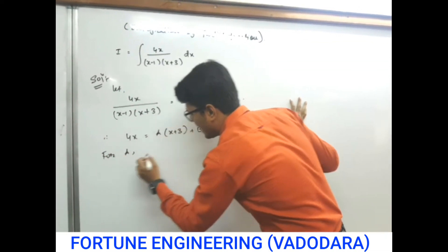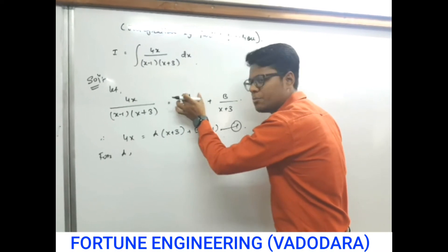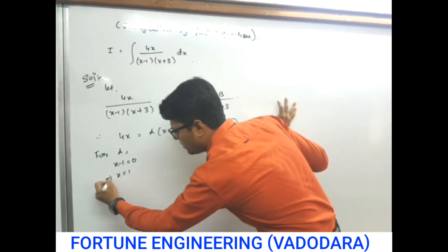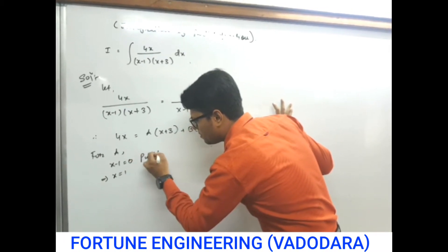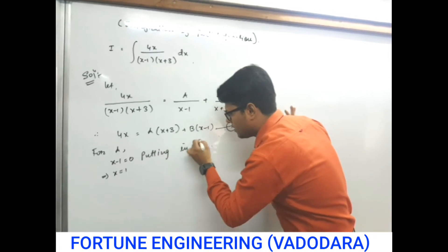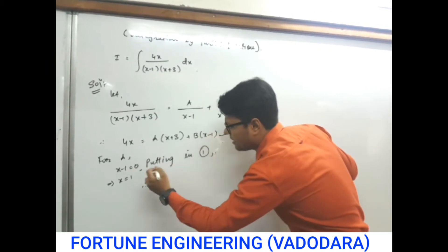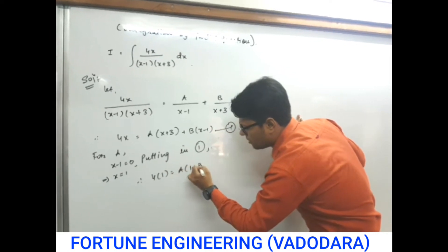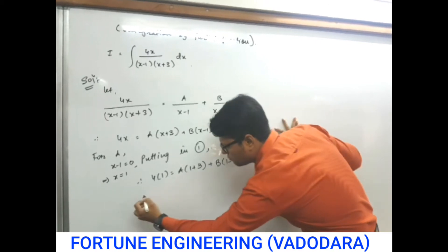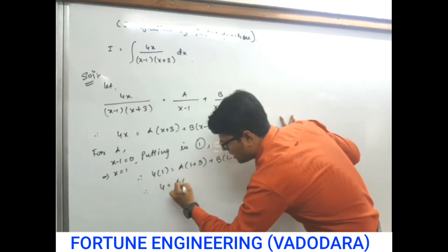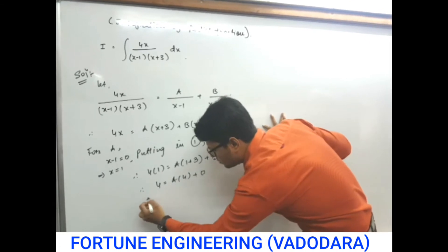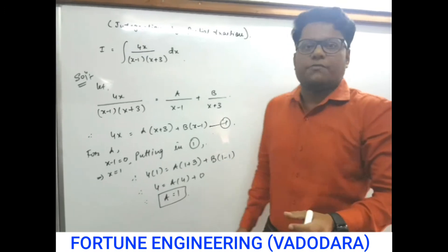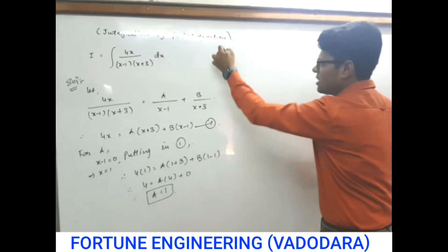For finding a, always take the denominator of a as 0. So x minus 1 is 0. So x is equal to 1. We put, putting in 1. So putting in 1, that will give us 4 into 1, a, 1 plus 3, b, 1 minus 1. So it will become 4 into 4 plus 0. So the answer a is equal to 1. So value of a is 1. We achieve the value of a is 1.